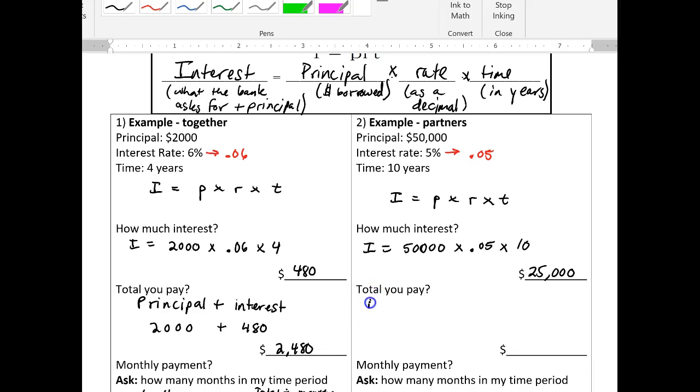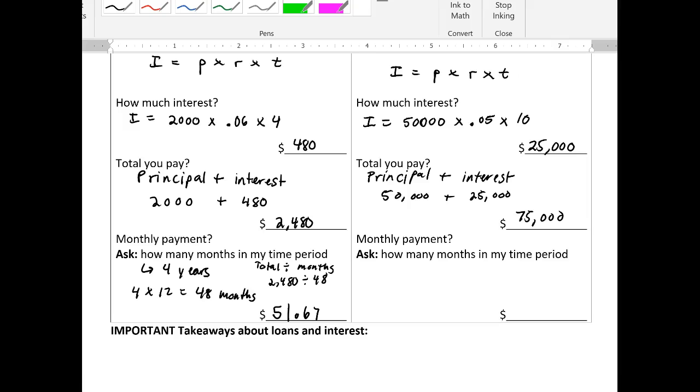So again, the total you pay is the principal, the money you borrowed plus the interest, the money the bank is going to get just for having you borrow that money. So $50,000 plus $25,000 means you're going to have to end up paying back a total of $75,000 for borrowing that $50,000 at 5% over 10 years.